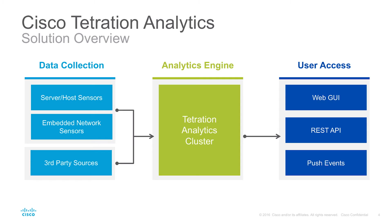So how do we do this? Tetration is made up of three main layers. Firstly, we have a data collection engine, then we have an analytics engine, and on top of that we then build different methods for you as the user to access that data. Firstly, we have a software and hardware sensor which streams telemetry towards the analytics cluster at a very fast rate.